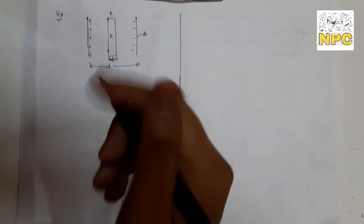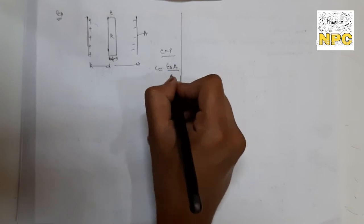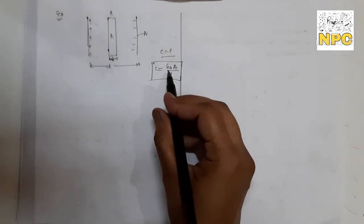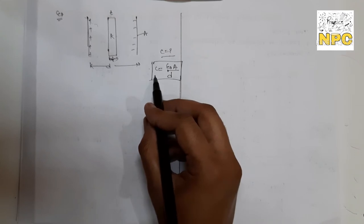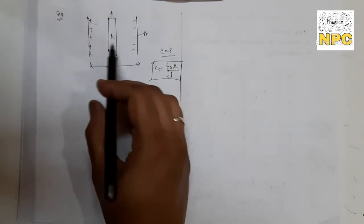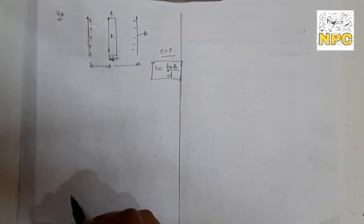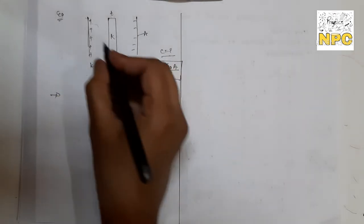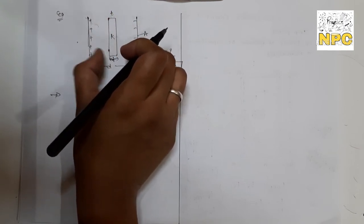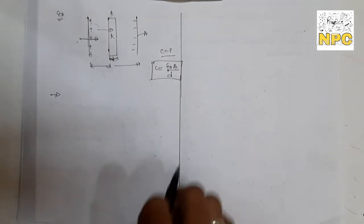The capacitance formula for a parallel plate capacitor is C = ε₀A/D (for air). For a medium with dielectric constant K, it becomes C = Kε₀A/D. Now, the dielectric slab is placed between the plates, so the air portion and the dielectric portion are in series. Two capacitances form: one for air (C₁) and one for the dielectric medium (C₂).